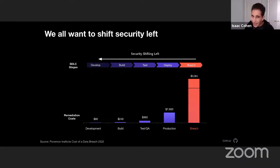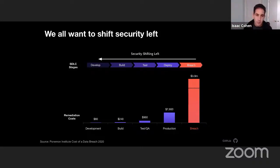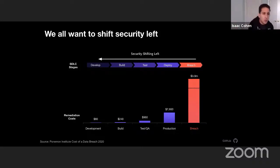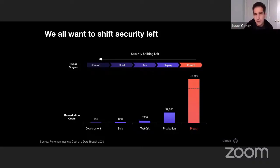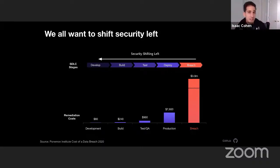We never want to get into a breach. We know how expensive that is — the average one being $3.9 million. So it makes sense. We want to move things earlier. We want to catch vulnerabilities earlier in the life cycle, ideally in development. That's the cheapest, that's the least painful.